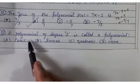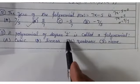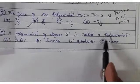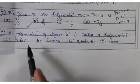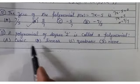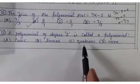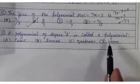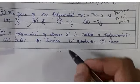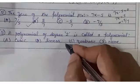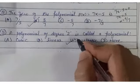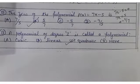Question 13: a polynomial of degree 2 is called a quadratic polynomial. Mark option C.